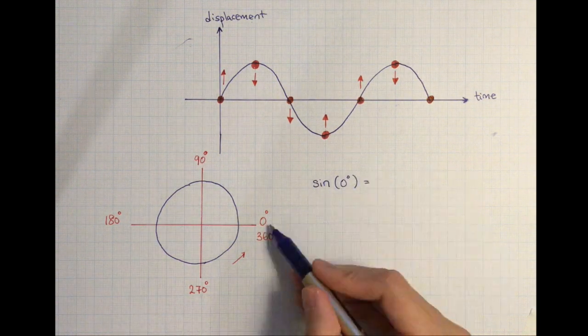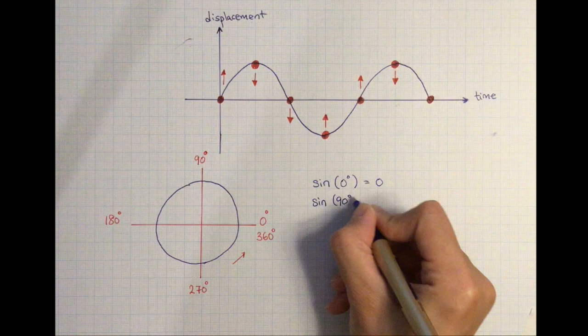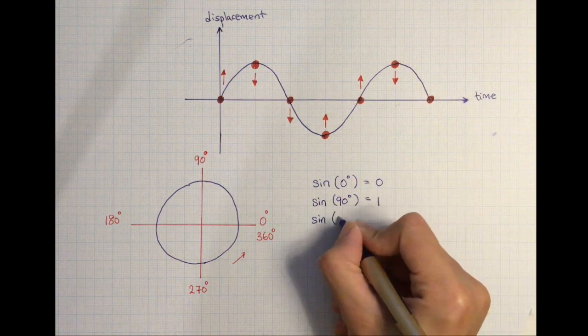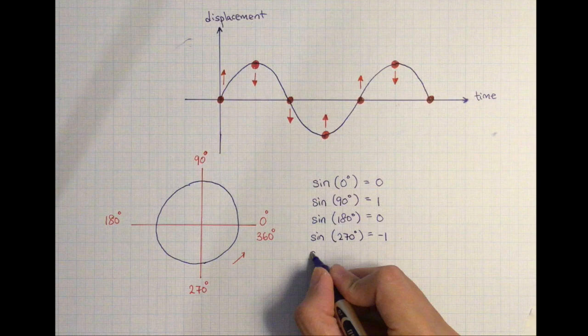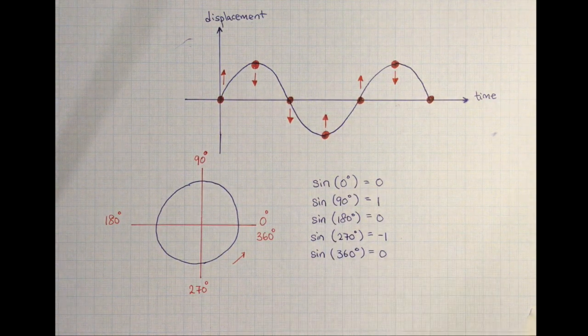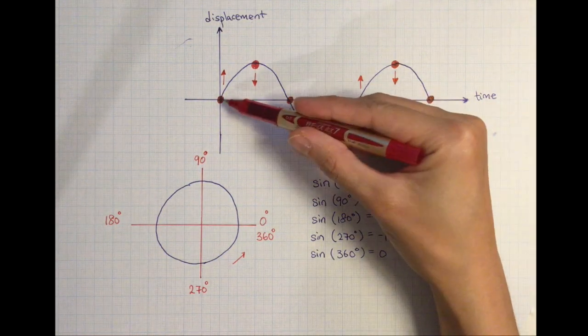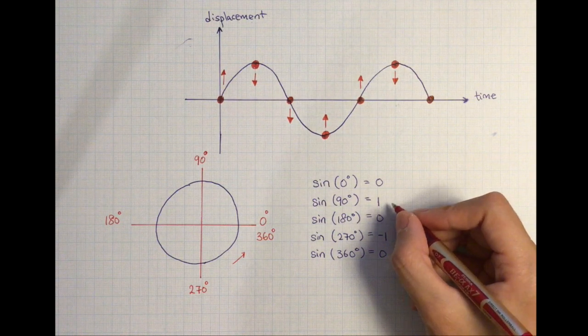Sine zero is going to give us zero. Sine 90 gives us one. Carry on using the sine function, you'll begin to see a pattern. We are able to use the sine function to represent a wave.